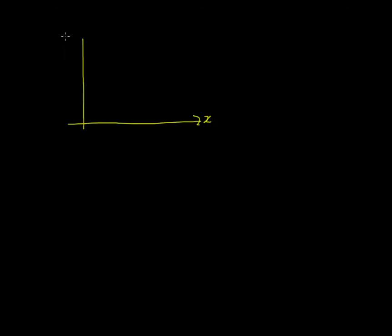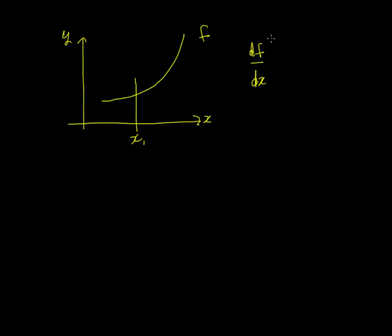As a motivation, let's consider we have a function f of one variable, x and y. Now if we look at the gradient of the function at a point x1, the gradient is going to be df by dx at x1. And if we look at the gradient at point x2, that's going to be df by dx at x2. We can draw those in — some gradient there, and some gradient there.